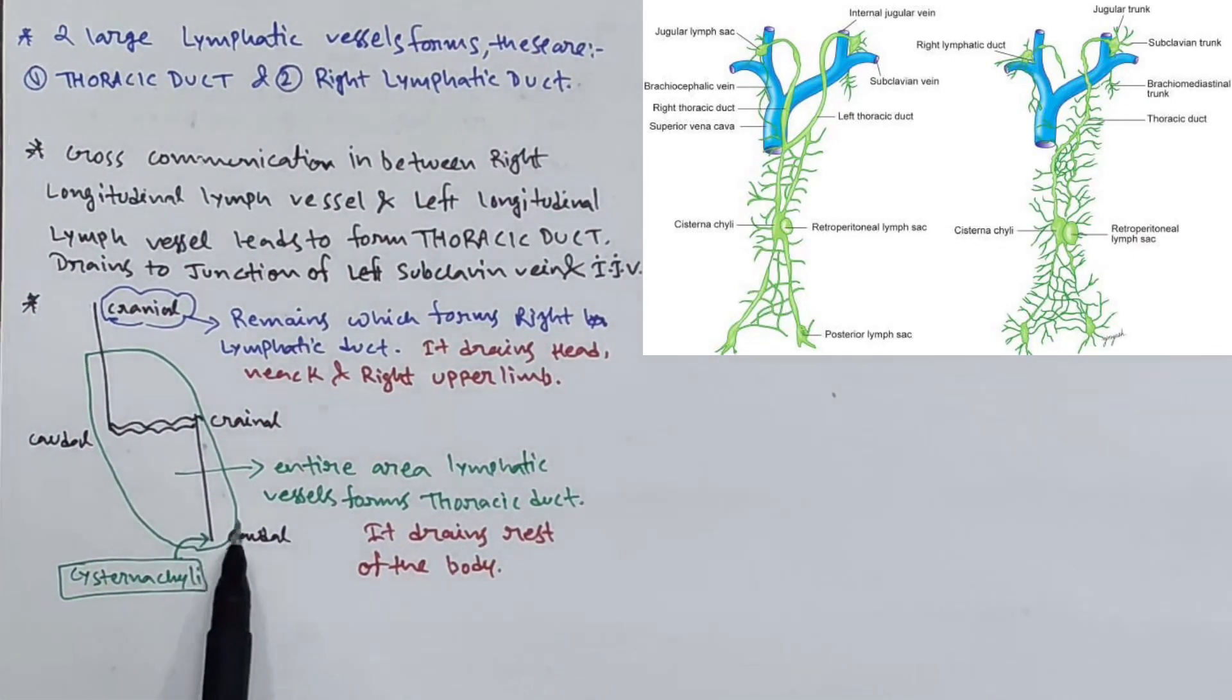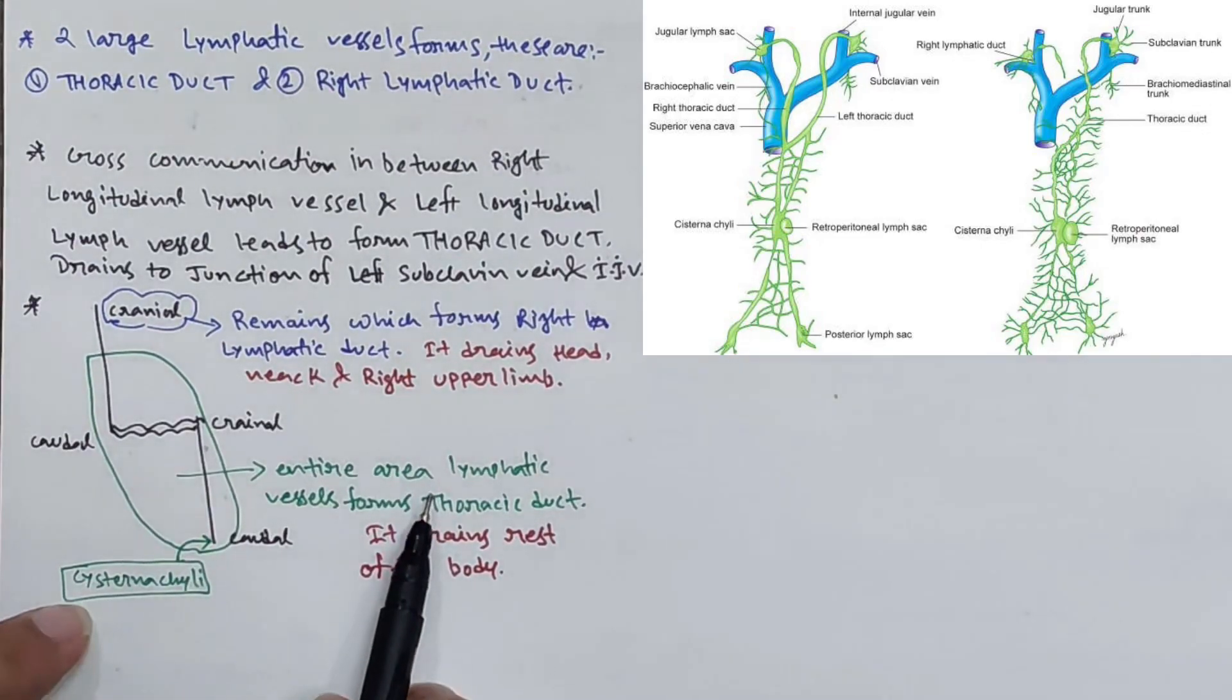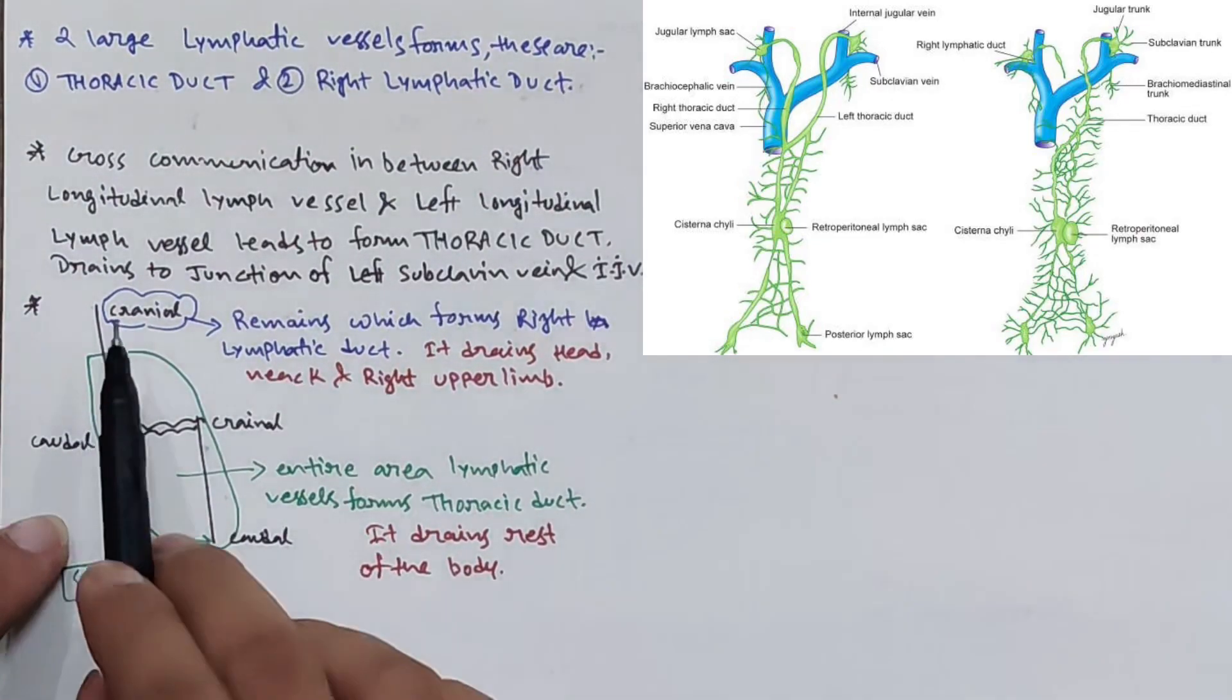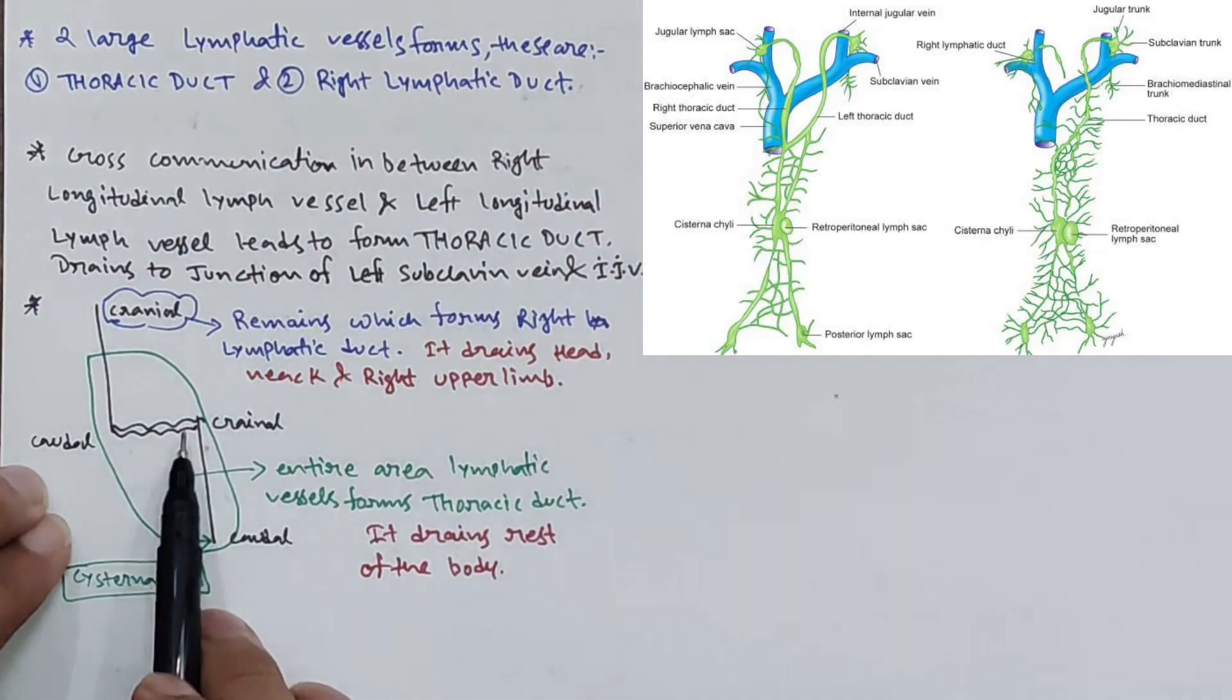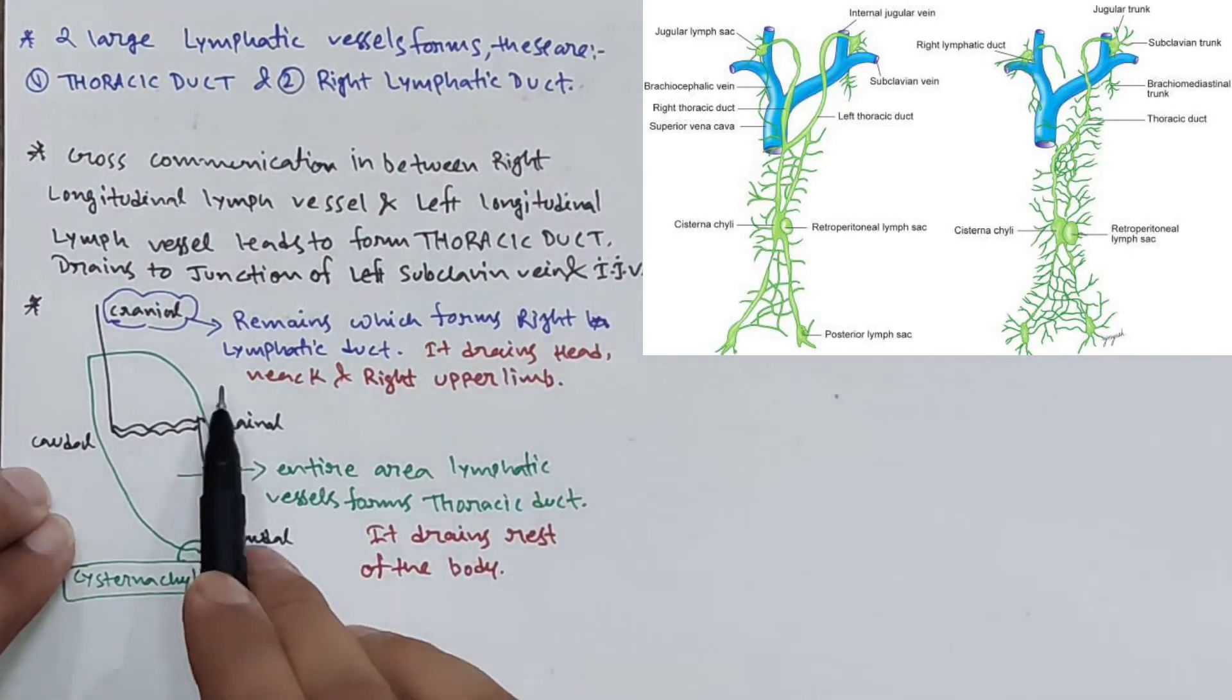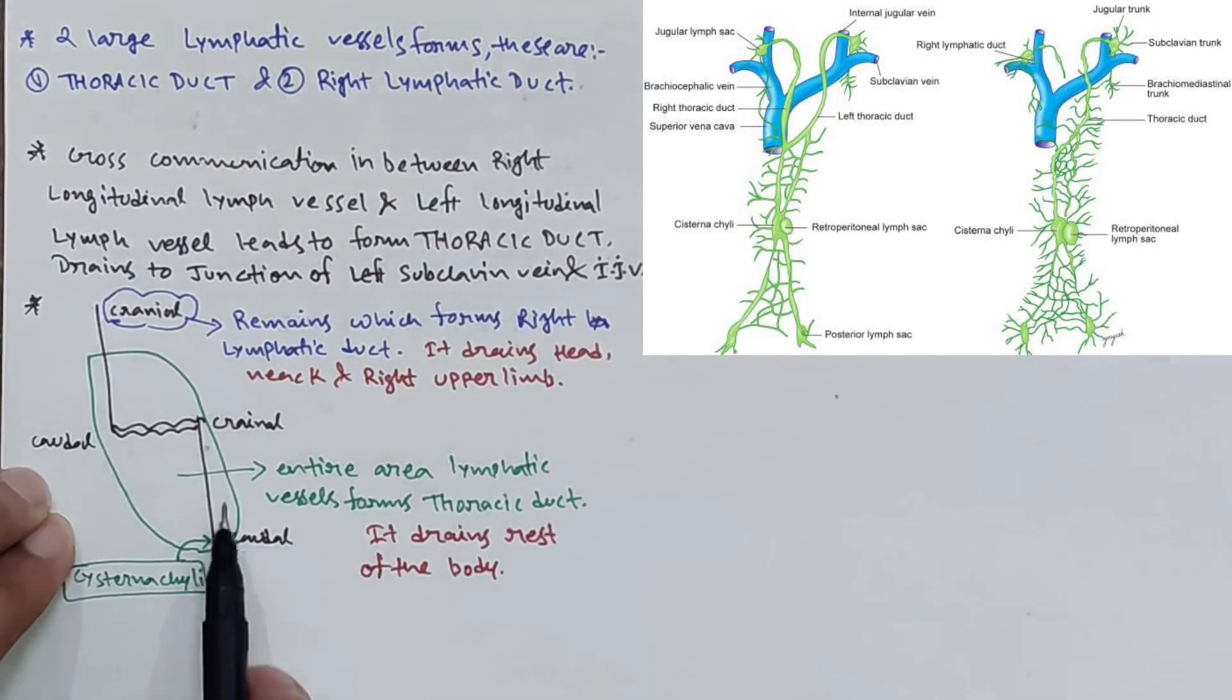The caudal part of the right longitudinal lymph vessel cross connects with the cranial part of the left longitudinal lymph vessel and ultimately forms the thoracic duct.